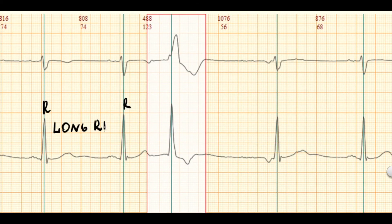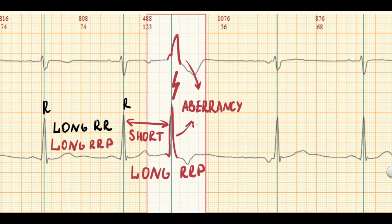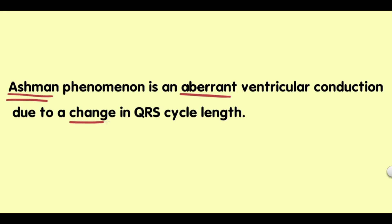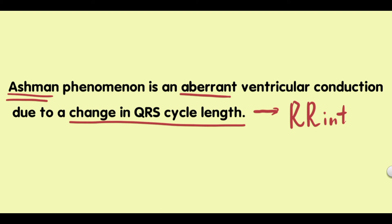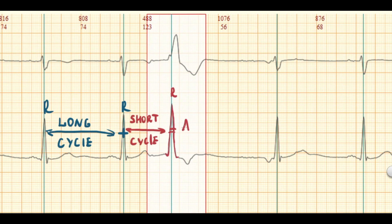A longer cycle lengthens the ensuing refractory period, and if a shorter cycle follows, it is likely to be conducted with aberrancy. An example of this condition is the Ashman Phenomenon. The Ashman Phenomenon is aberrant ventricular conduction due to a change in QRS cycle length represented as the R-R interval. If a sudden lengthening of the QRS cycle occurs, the subsequent impulse with a normal or shorter cycle length may be conducted with aberrancy. Therefore, the Ashman Phenomenon requires a long-short R-R interval sequence.